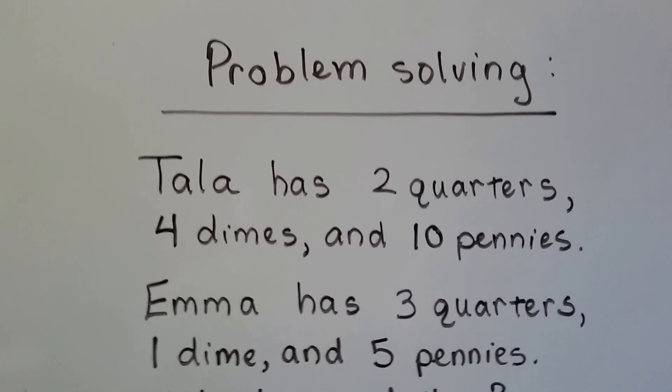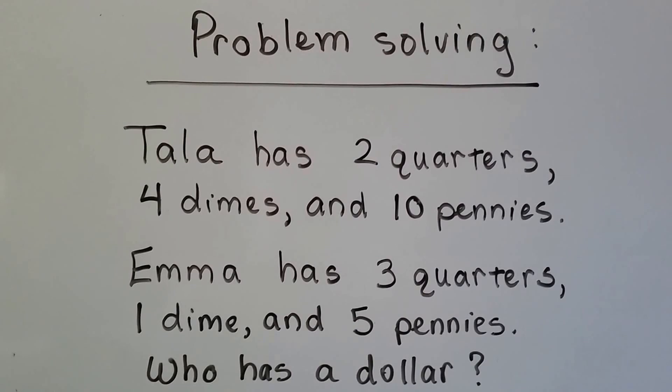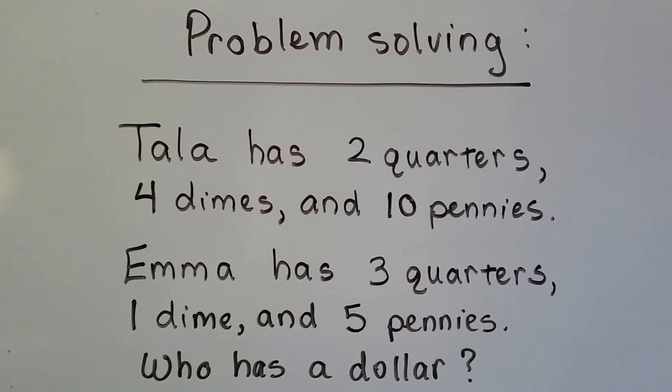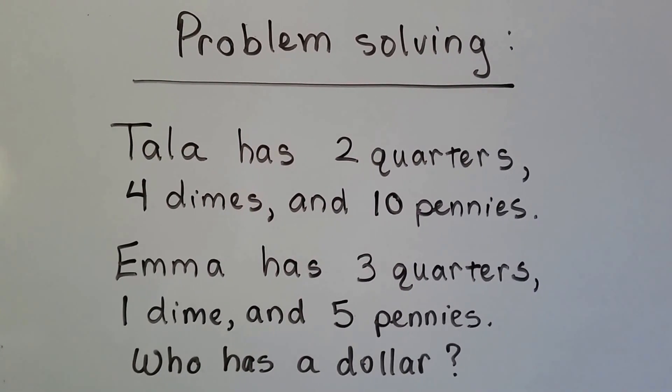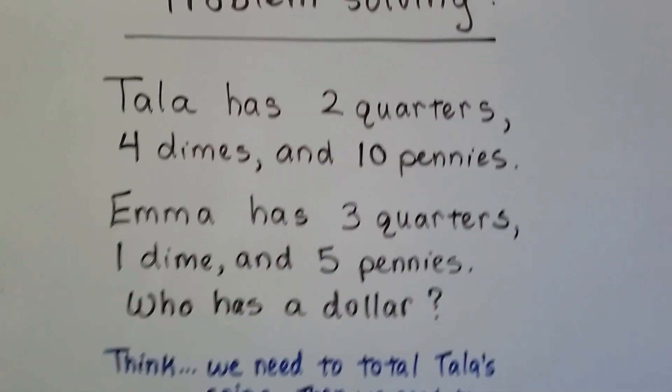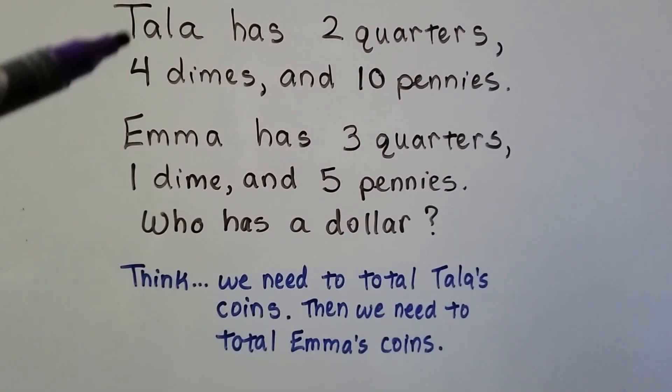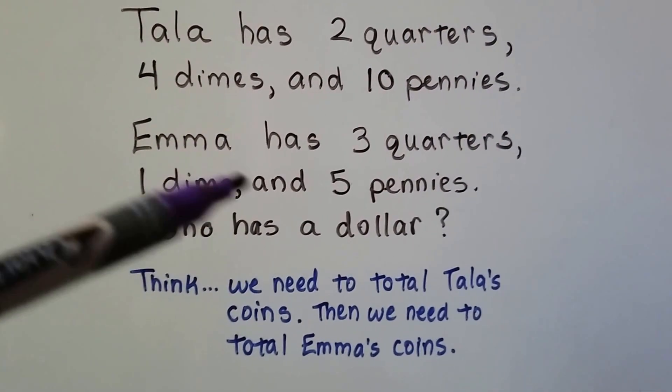Tella has two quarters, four dimes, and ten pennies. Emma has three quarters, one dime, and five pennies. So who has a dollar? We need to total Tella's coins, then we need to total Emma's coins, and then we can see who has the most.